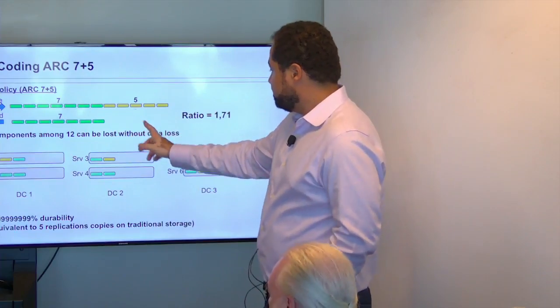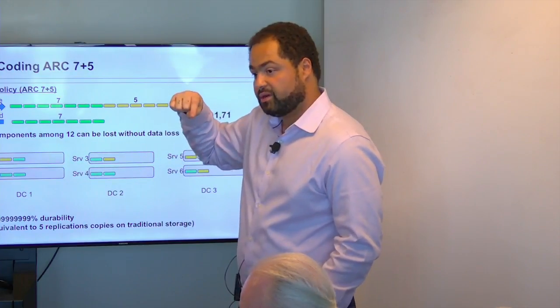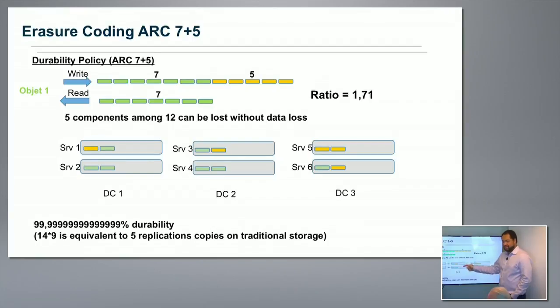For writes in the seven-plus-five geo-distributed configuration, it's synchronous — you wait for all parities to be written before acknowledging. This is because you prioritize durability over latency. Typically for archive use cases, you would tolerate the write latency in exchange for 14 nines of durability.